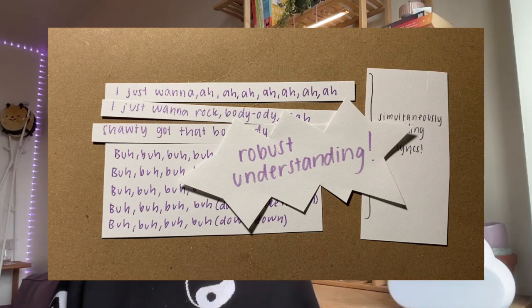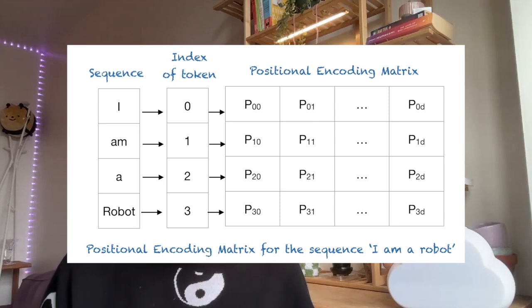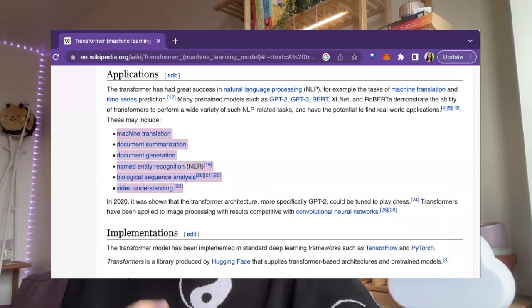Another advantage of the transformer is the use of positional encoding, which allows the model to understand the relative positions of words in a sentence even though it is not processing the sequence in a sequential manner. The transformer model has been very successful in natural language processing tasks, and beyond being used for GPT-3, it's also been applied to other areas like computer vision and speech recognition with similar success.